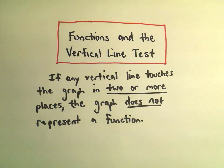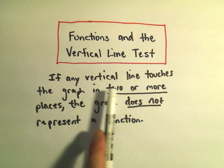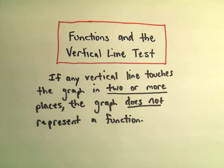In this video I want to talk about functions and the vertical line test. The basic idea is if you have a graph and you want to decide if that graph represents a function, if you were to draw any vertical line and it touches the graph in two or more places, then the graph does not represent a function.